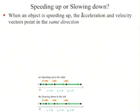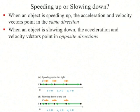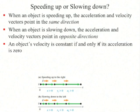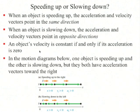When an object is speeding up, the acceleration and velocity vectors point in the same direction. When an object is slowing down, the acceleration and velocity vectors point in opposite directions. An object's velocity is constant if and only if its acceleration is zero. In motion diagram (a), the object moves left to right — velocity vector is positive (rightward) and acceleration is positive (rightward), so it's speeding up. In motion diagram (b), the object moves right to left — velocity is negative (leftward) but acceleration is positive (rightward), and yet this object is slowing down. Make sure you understand this.